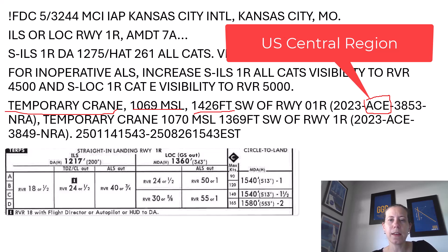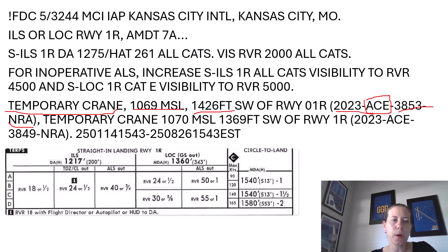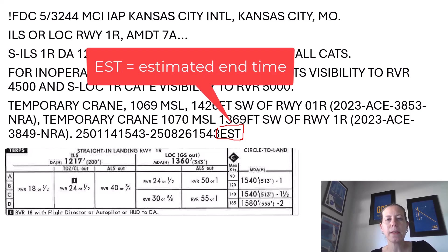There's also a second temporary crane with all the same information. I'm not going to re-read those dates, other than to say: if you see EST at the end, that means it is estimated — they do not know when they're going to be done with the crane. So this NOTAM is going to hang around until the crane and the other crane are put away and are no longer obstacles.